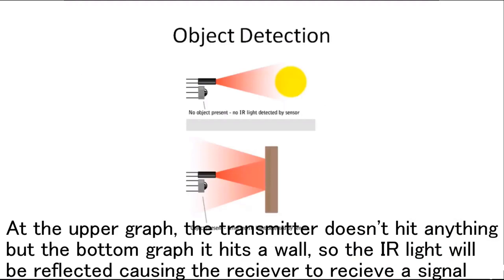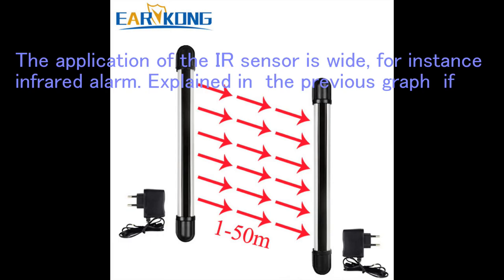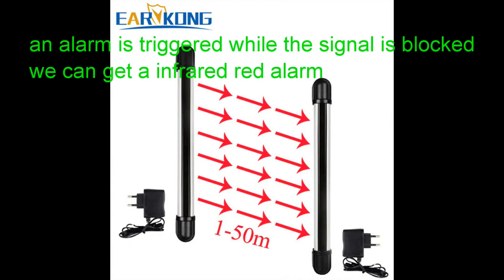The transmitter emits an infrared wave. If it hits an object, it will reflect and the receiver will receive the wave. At the upper graph, the transmitter doesn't hit anything, so the receiver receives nothing. But at the bottom graph, it hits a wall, so the infrared light will be reflected, causing the receiver to receive a signal.